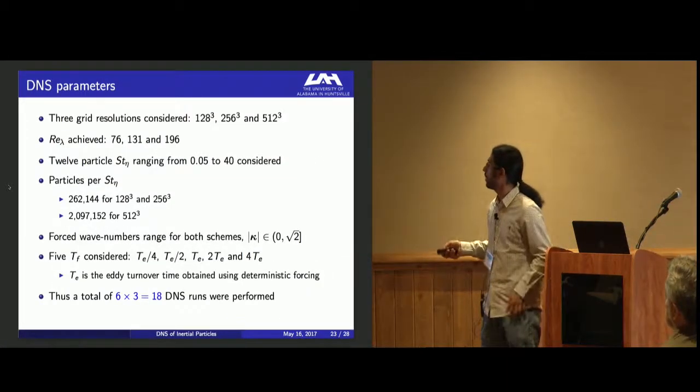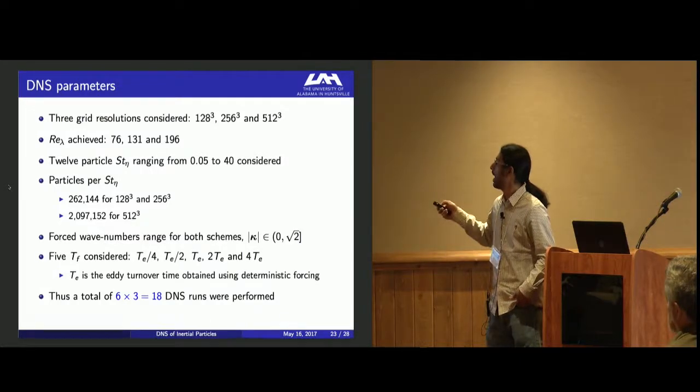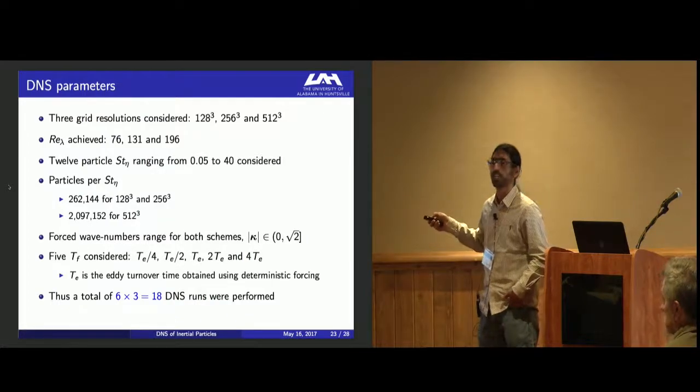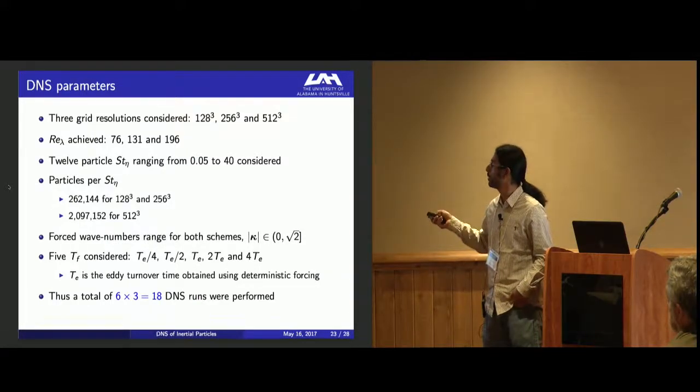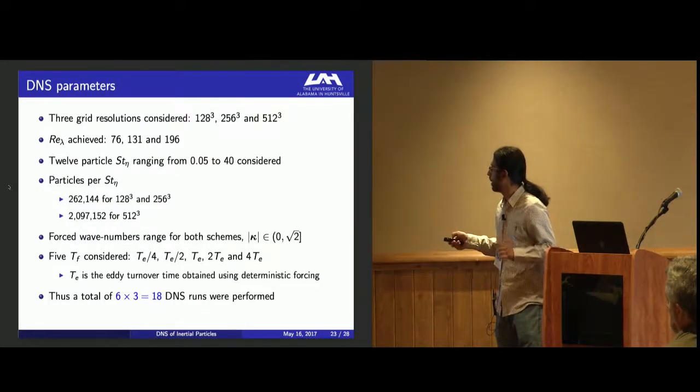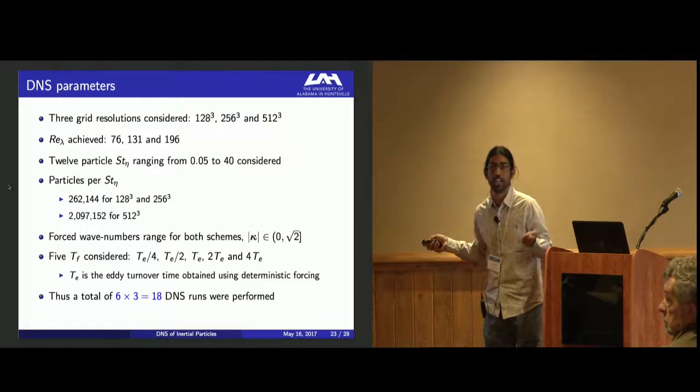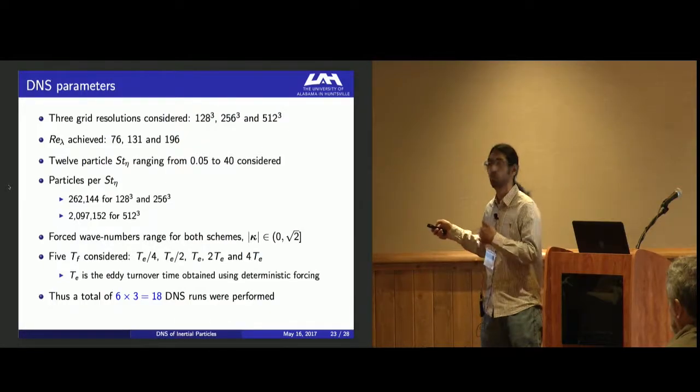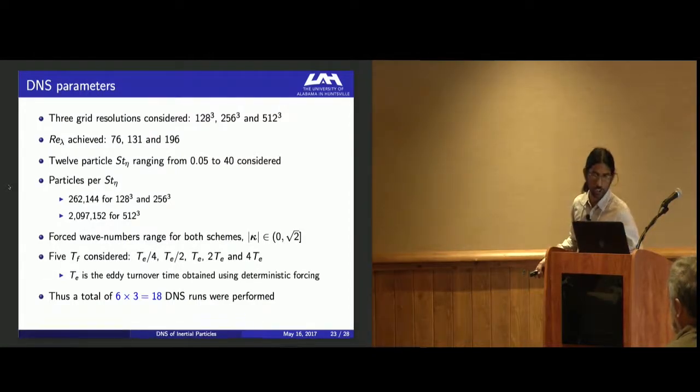Let me give you the DNS parameters we considered. We considered three grid resolutions: 128-cubed, 256-cubed, and 512-cubed, corresponding to Taylor microlength-based Reynolds numbers of 76, 131, and 196 respectively. We considered 12 Stokes numbers based on Kolmogorov length scale, ranging from 0.05 to 40. We considered five timescales based on t_E, the eddy turnover time determined using deterministic forcing scheme, from t_E/4 to 4t_E. In total, 618 DNS runs were performed on all these Stokes number particles.